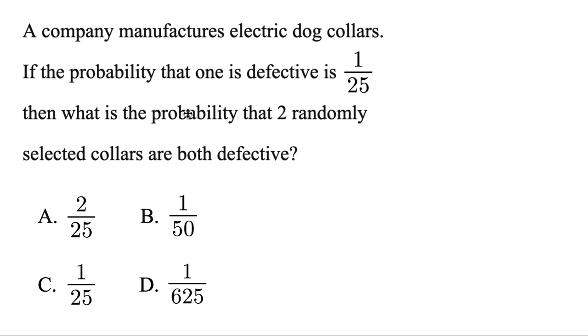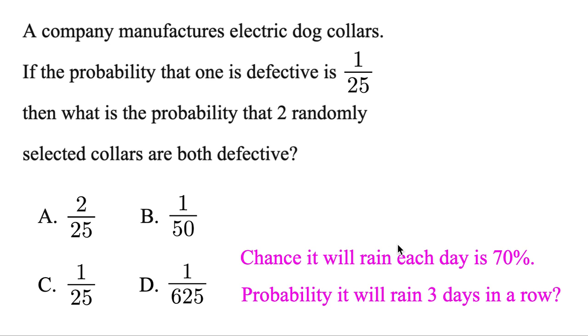To find multiple probabilities happening, let's go ahead and look at an example. The chance it will rain each day this week is 70%. What's the probability it'll rain three days in a row? Well, to find multiple probabilities, just put spots for the three different days here. And then there's a 70% chance of rain for each day. So we'll put .70, same thing as 70%.